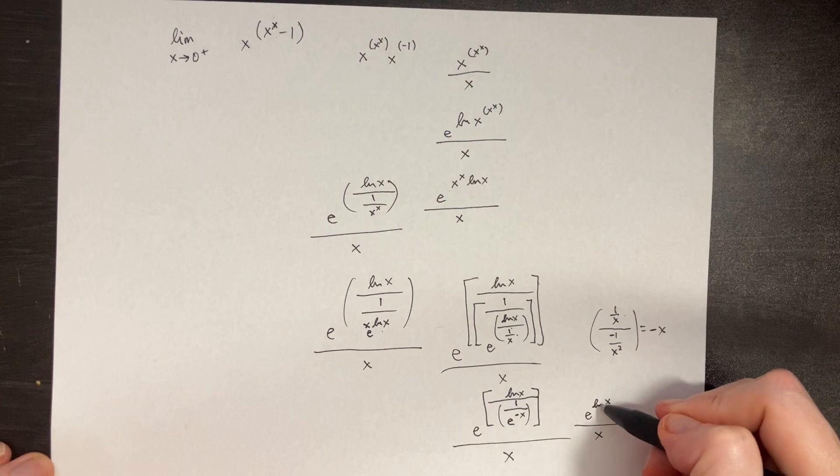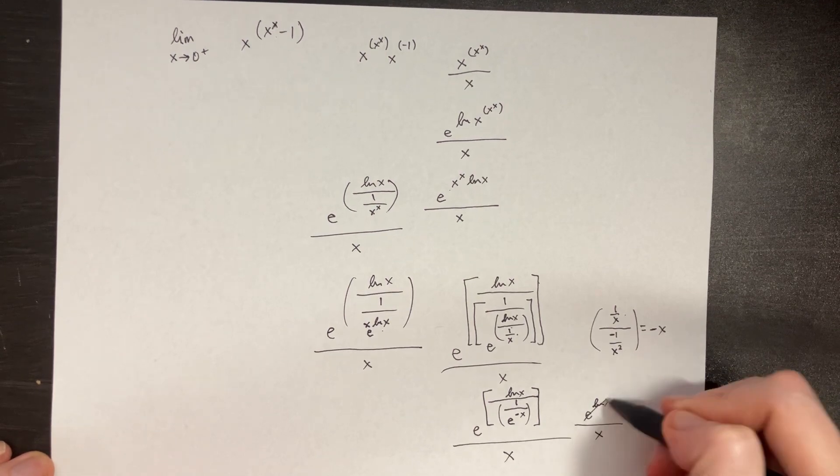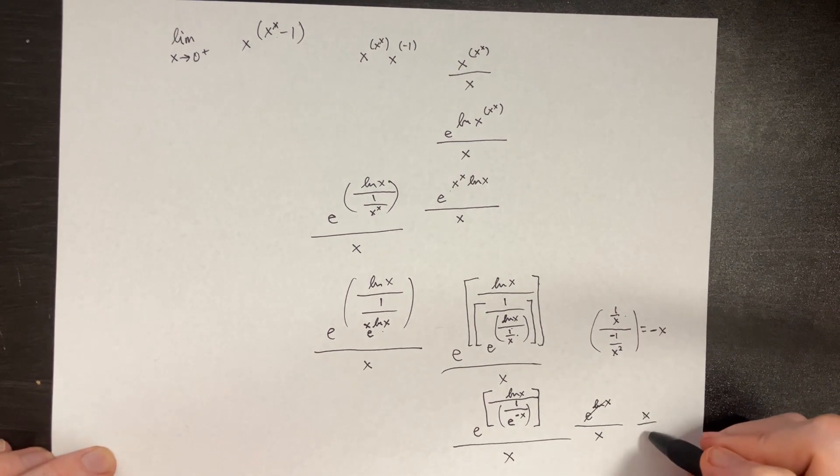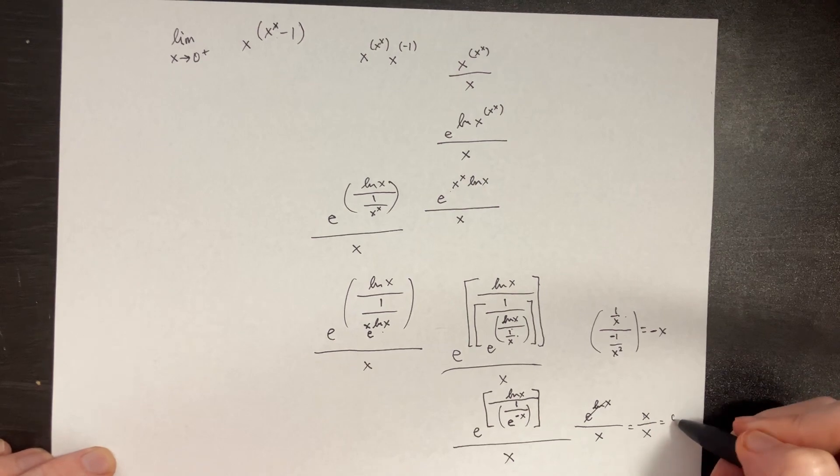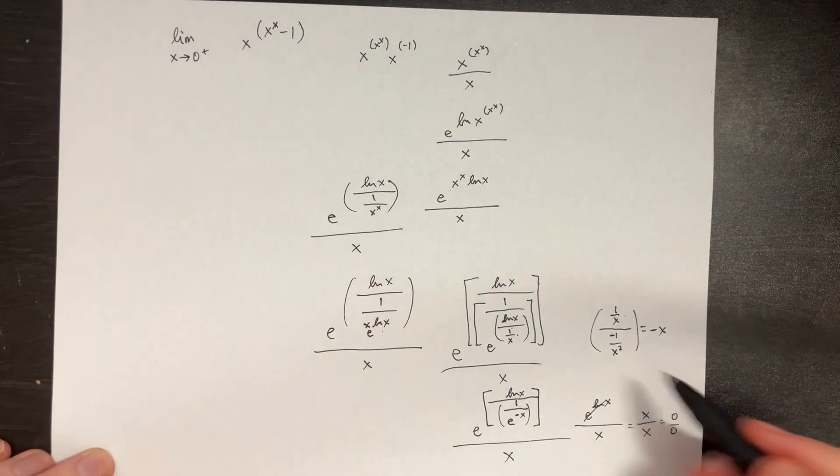And if that is just going to cancel, then we get something like x over x. Keeping in mind these are 0 over 0, because we've sent everything to 0 already.